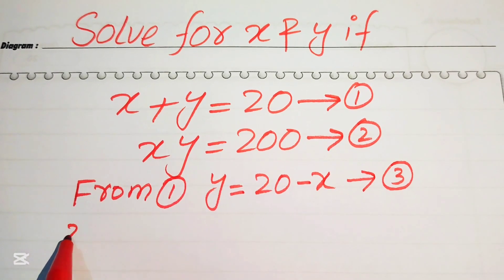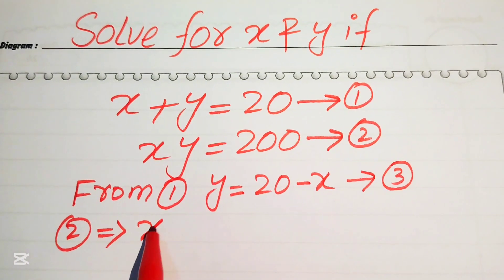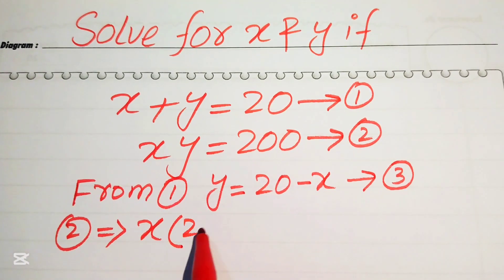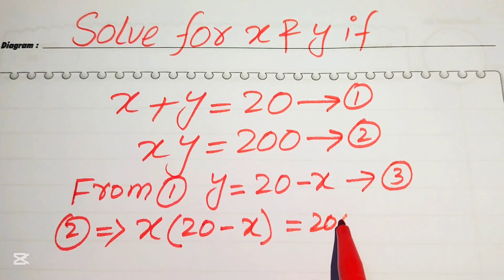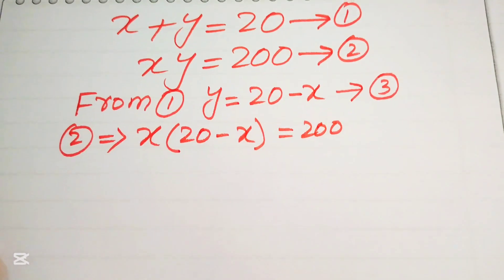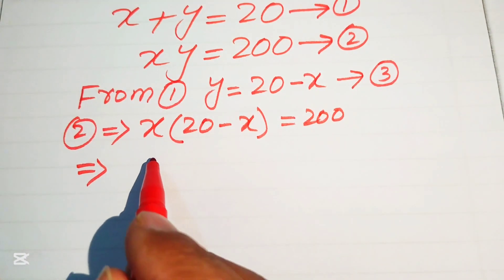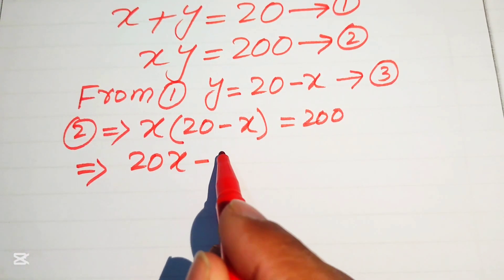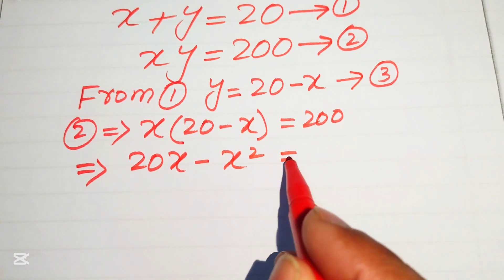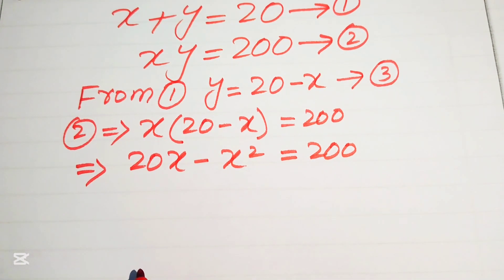Now in the next step, we need to put the value of y into equation number two. Equation number two implies that x times y, and the value of y is 20 minus x, equals to 200. We need some simplification here, so we multiply x on both terms, and it becomes 20x minus x squared equals to 200.